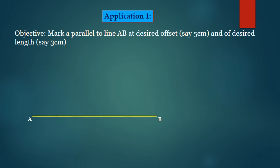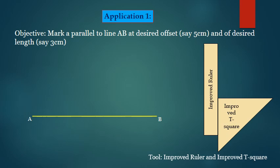First application: mark a parallel line AB at desired offset, say 5 cm, and of desired length, say 3 cm. Let's consider line AB to which offset has to be marked. We are using only improved ruler and improved T-square.